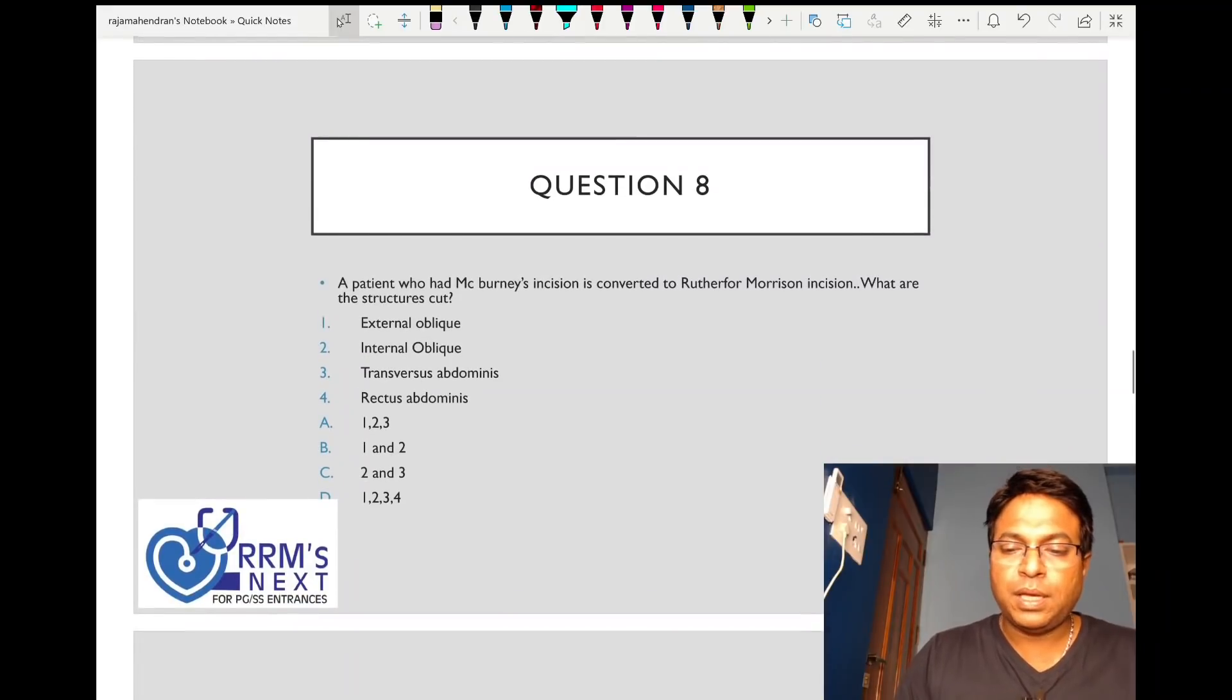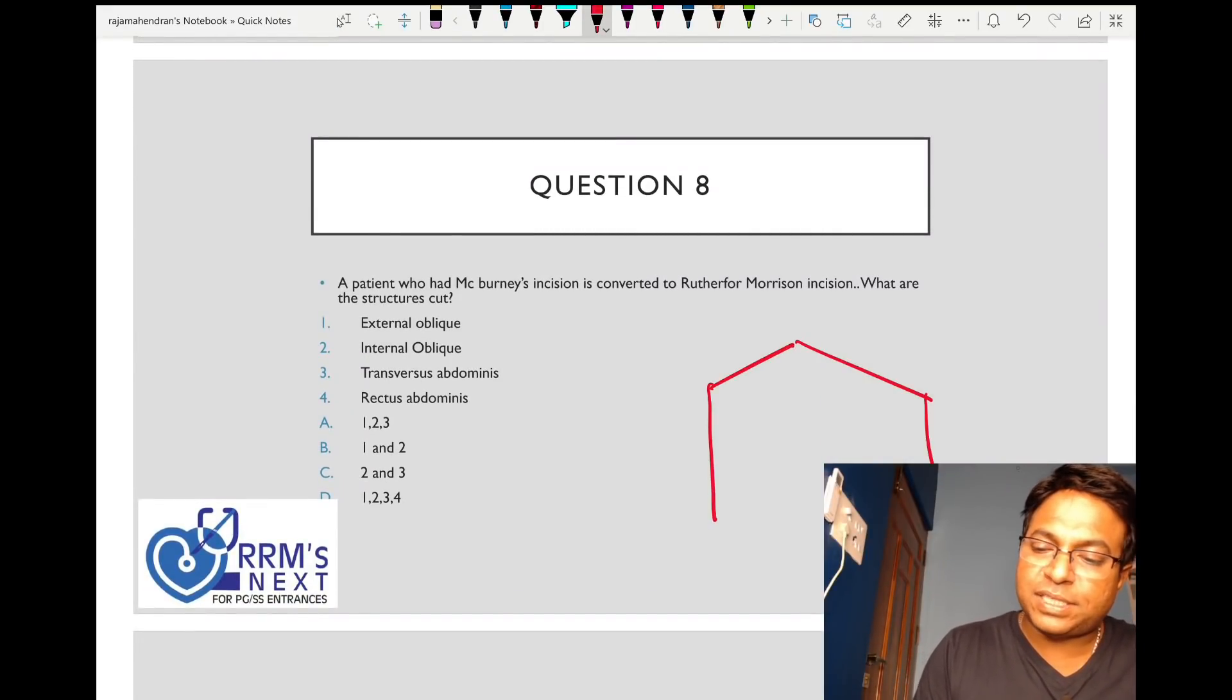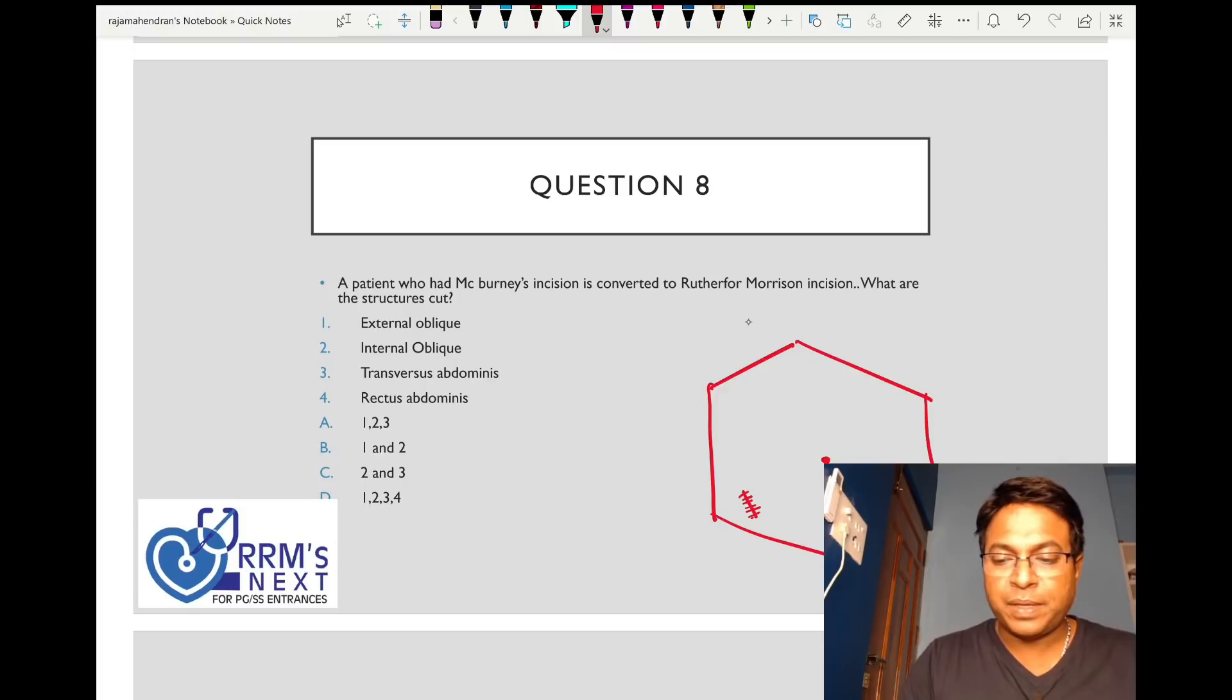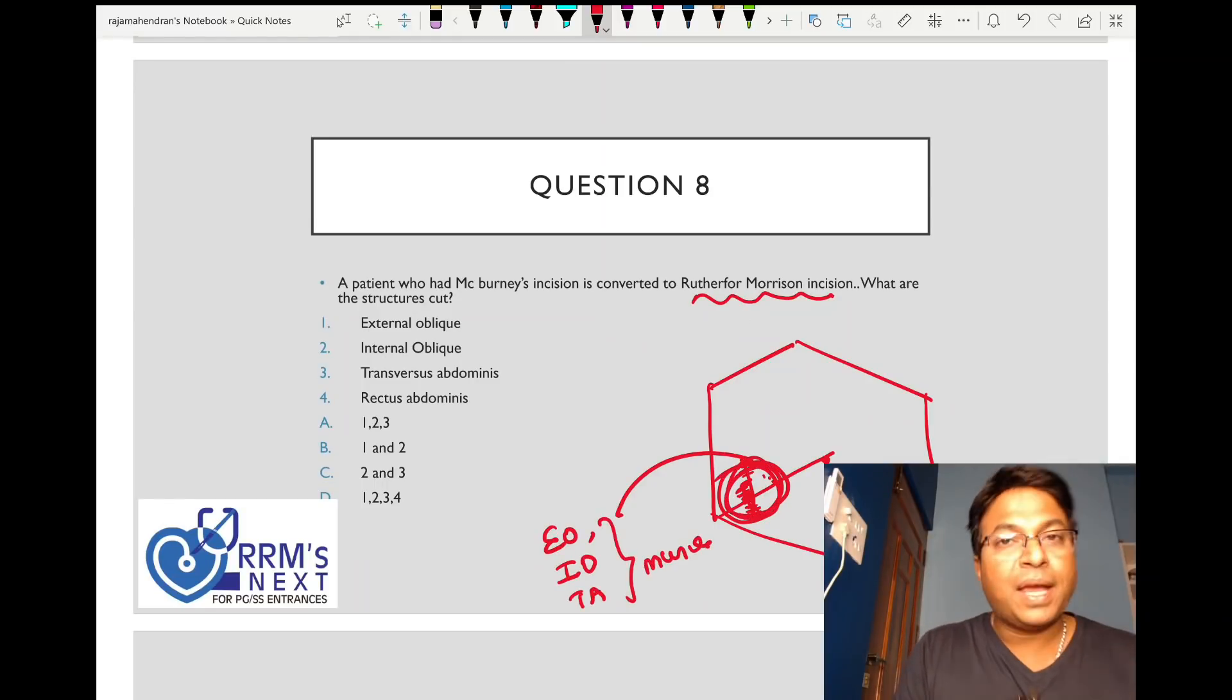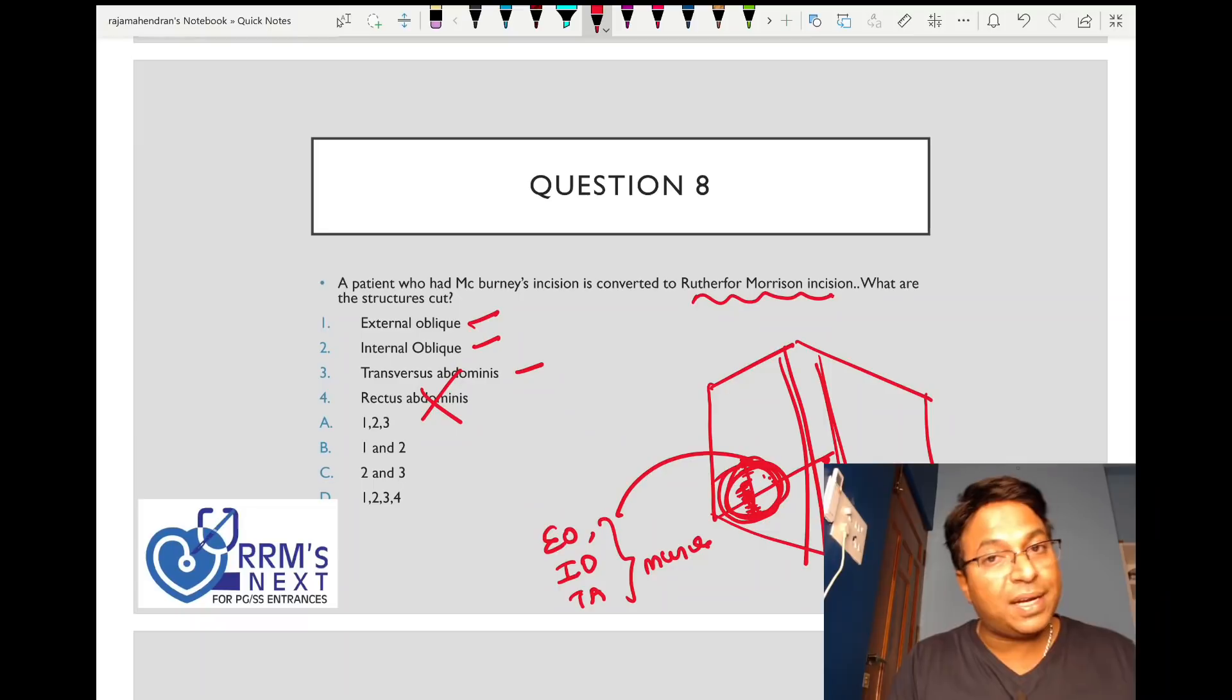Patient who had a McBurney's incision. This is a clinical anatomy question. McBurney's incision is also known as gridiron incision, cutting skin and subcutaneous tissue perpendicular to McBurney's point. Rutherford Morrison is a muscle cutting incision. What are the three muscles? External oblique, internal oblique, and transversus abdominis. Not rectus abdominis, which is located elsewhere. Answer is one, two, three.